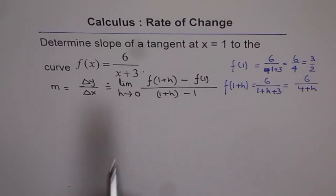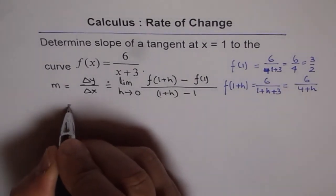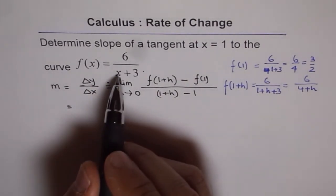So, that is the value of f(1+h). Now, to find the slope, what we will do is, we replace these values with these values and then find the slope. So, we get slope at x = 1.